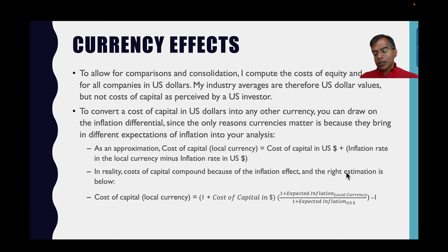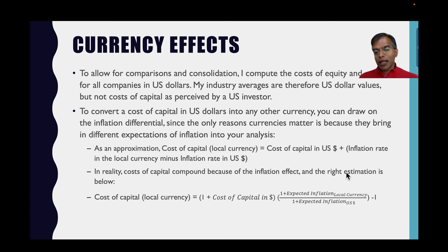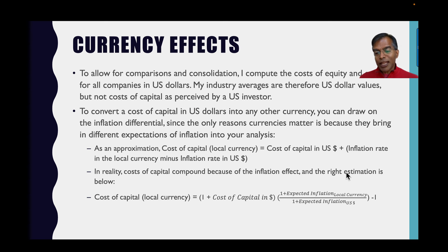Use the cost of capital in the spreadsheet, adjusted for different currencies if needed. Remember, I compute this at the start of every year, so if risk-free rates have changed dramatically over the course of a year, you may want to readjust — it's a relatively simple adjustment. You can arrive at a current cost of capital for a company in any industry using industry averages. I hope you find this dataset useful. Thank you very much for listening.